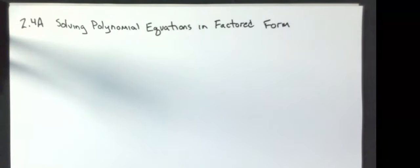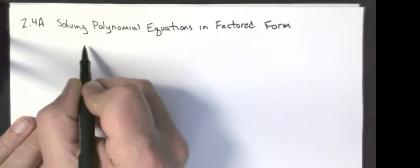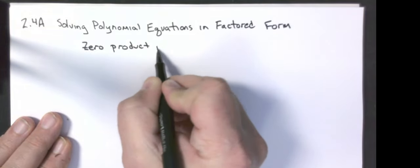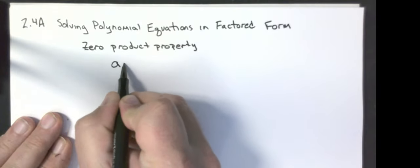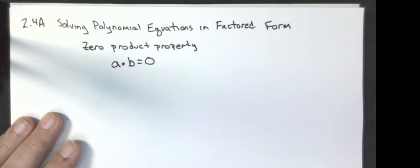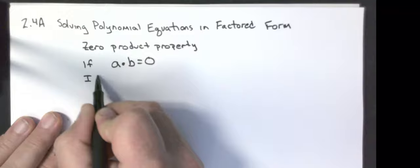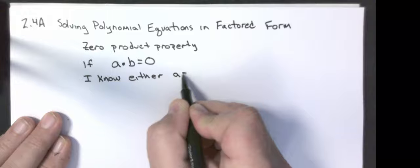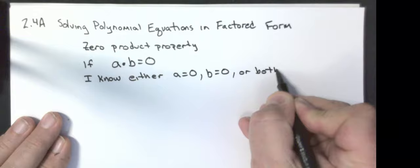Our next section has us solving some polynomial equations in factored form. We're going to use something called the zero product property. What that tells us is if I have two numbers that multiply together equals zero, so if a times b equals zero, I know either a equals zero, b equals zero, or both are equal to zero.